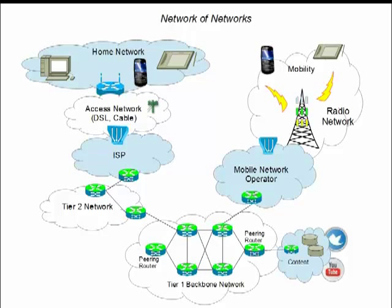Mobile networks work much the same way in the sense that they are really a collection of two different types of networks: a mobility network, which is a radio network with cell towers — there are over a hundred thousand cell towers in the United States — and that radio network manages the air interface as well as the mobility itself, allowing people to move from site to site while maintaining IP connectivity. The mobile network operators collect all that traffic, which then connects again to the tier 1 backbone IP services. Traffic running over these two types of networks — mobility and home — generally can't tell the difference, because this is IP end to end.